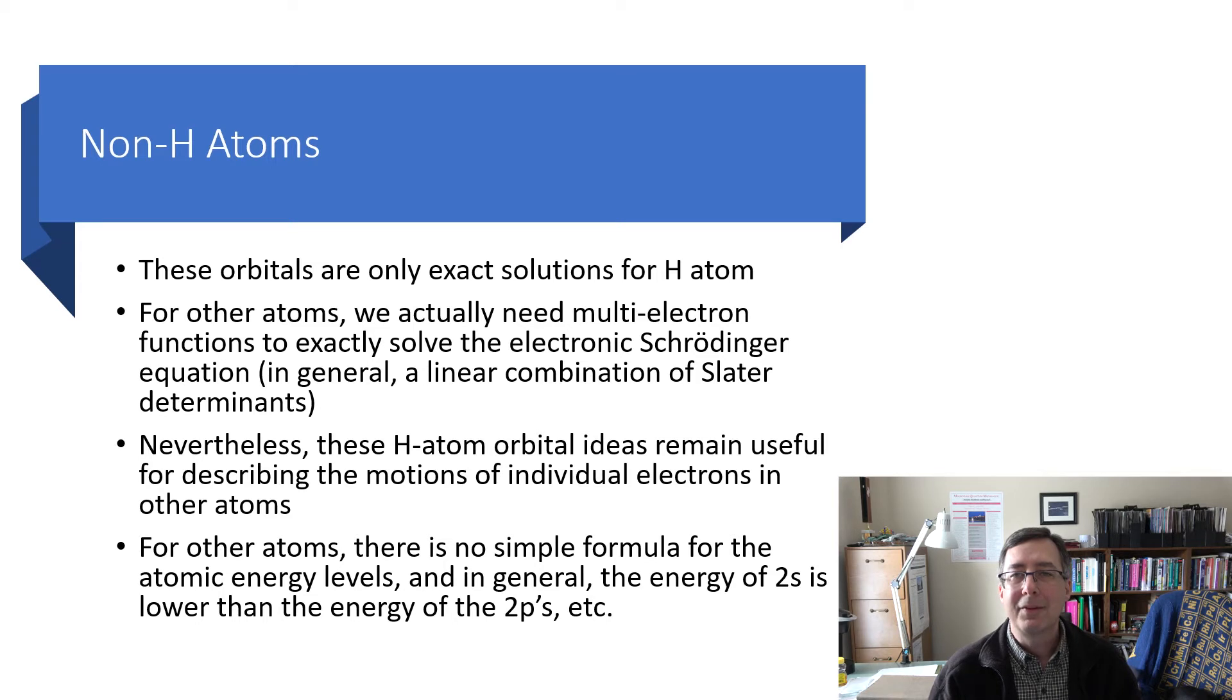Now, what about atoms that aren't hydrogen atom? Well, everything goes out the window because all these wonderful orbitals I've just shown you are valid for hydrogen atom, but they're only ideas or inspiration for other atoms. For other atoms, what you really need to do is solve a multi-electron electronic Schrödinger equation and get multi-electron wave functions. And in general, those will look like a combination of multiple Slater determinants. So they're just complicated. There are no one-electron functions that pop out of solving the Schrödinger equation unless it's hydrogen atom. Nevertheless, the concept of s orbitals and p orbitals and d orbitals does remain useful and at least sort of qualitatively correct for a multi-electron atom. So we won't dispense with them entirely.